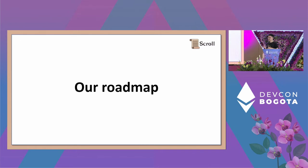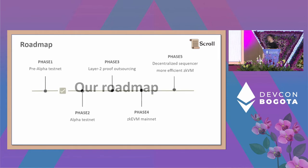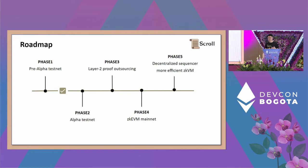Now let's talk about our roadmap and where we're going. At a high level, our roadmap looks like this. In phase one, we have a pre-alpha testnet for users and developers: users can interact and developers can deploy arbitrary contracts as long as they register.